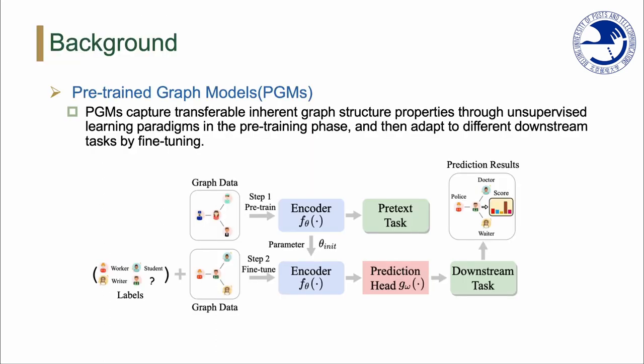Recently, inspired by pre-trained language models, various pre-trained graph models have been proposed. Generally, PGMs capture transferable inherent graph structure properties in the pre-training phase and then adapt to different downstream tasks by fine-tuning.